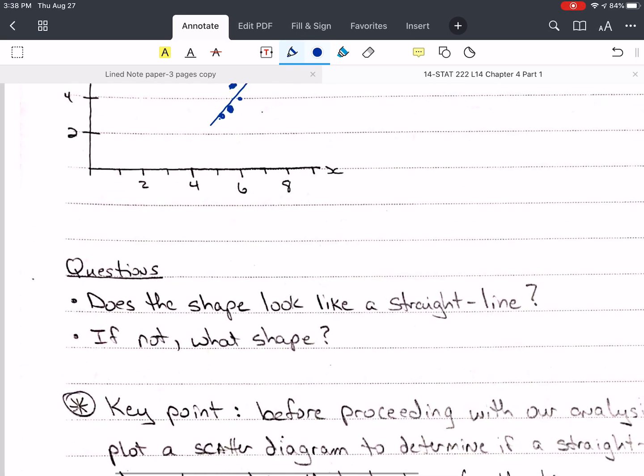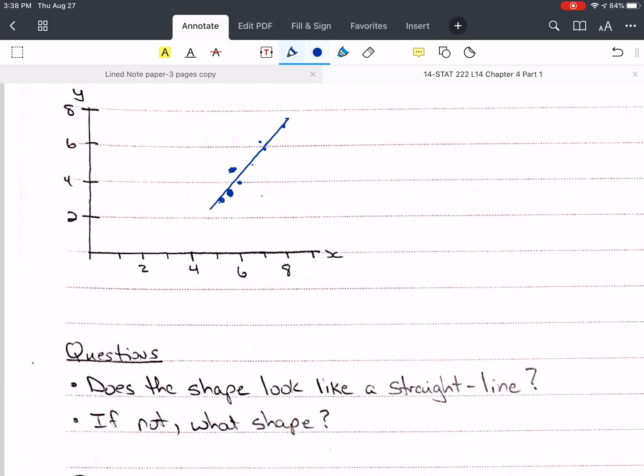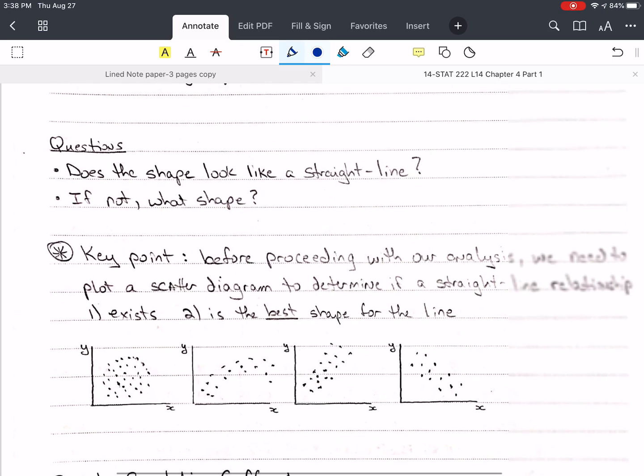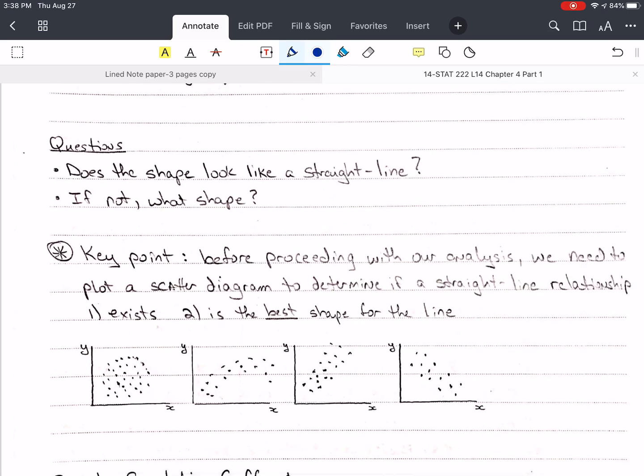Does the shape look like a straight line is a question we should ask. And if it doesn't, what shape does it look like? This is a key point that you would need to know. Before we proceed with any analysis, we need to plot a scatter diagram and determine if our straight line is the right relationship. Number one, does it exist? Number two, is it the best shape for the line?